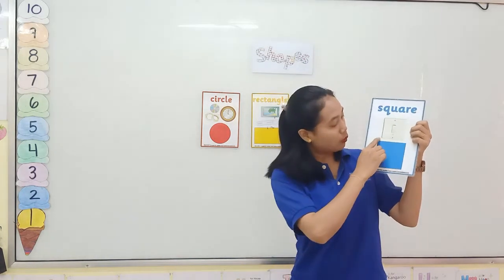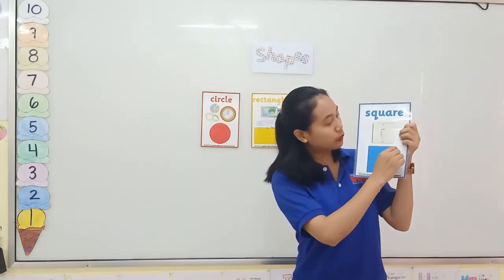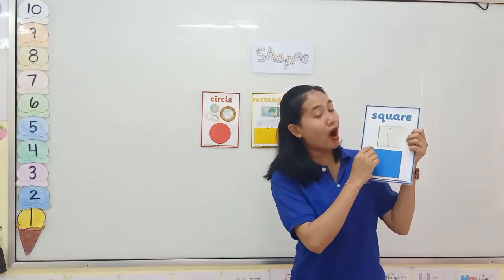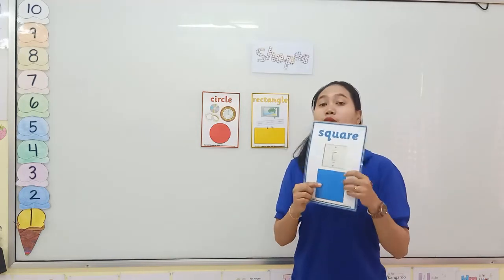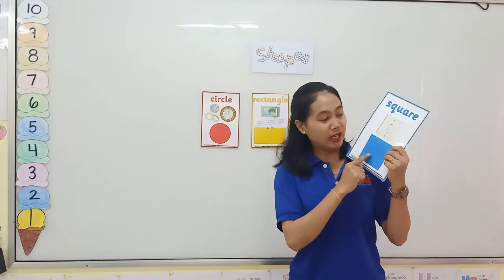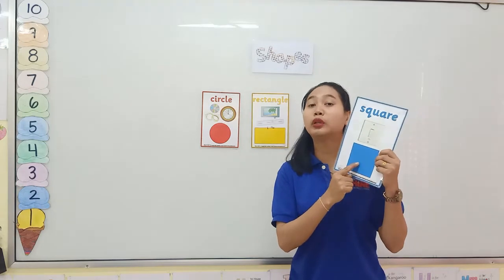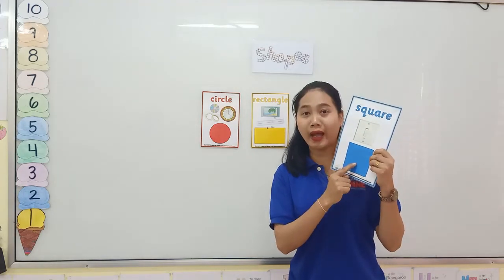Can you count with me? One, two, three, four. Great. It is a blue square.